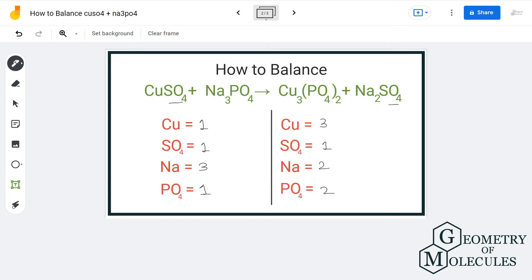We have 3 copper on the product side and only 1 on the reactant side, so we will multiply it by 3. This makes 3 sulfate ions on the reactant side and there is only 1 on the product side, so we will multiply it by 3.